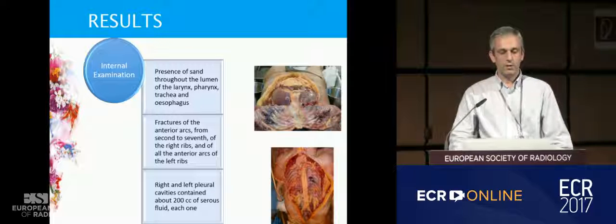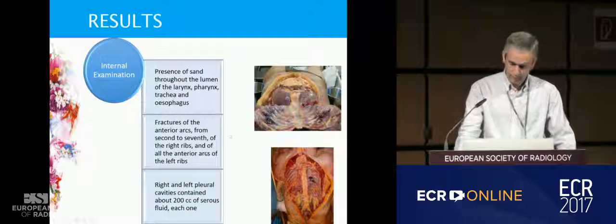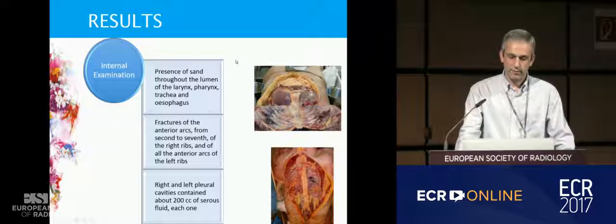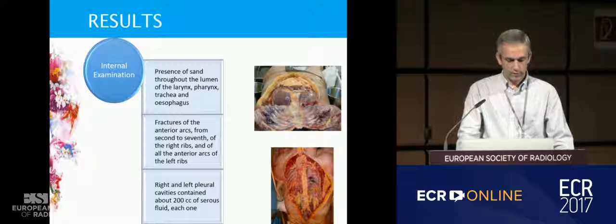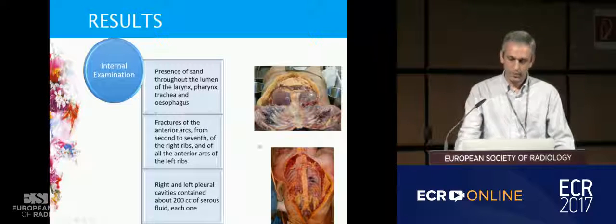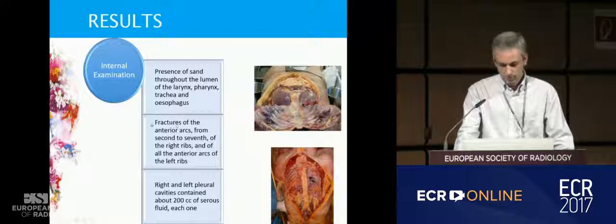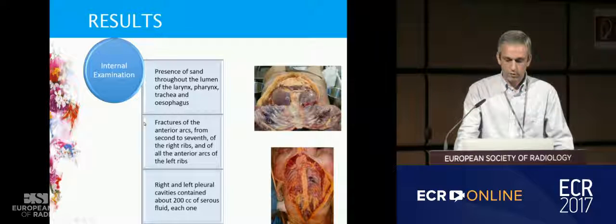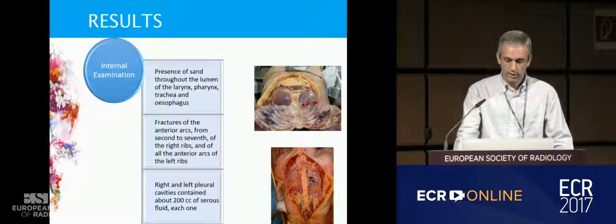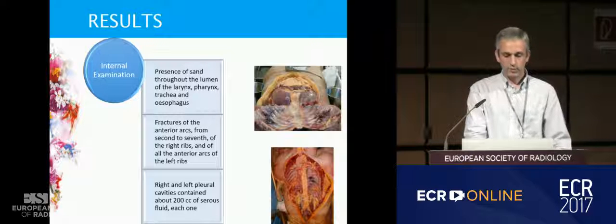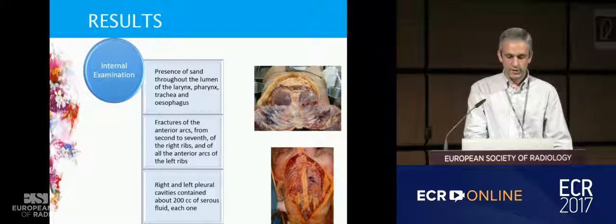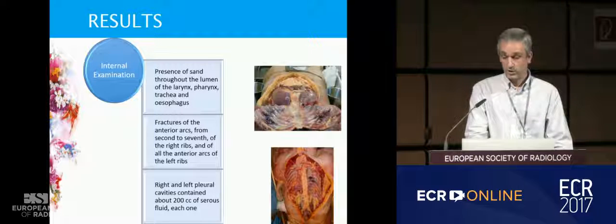In the internal dissection, it was seen the presence of sand throughout the lumen of the larynx, pharynx, trachea and esophagus. There were fractures of the anterior arcs from second to seventh on the right ribs, and of all the anterior arcs of the left ribs. The right and left pleural cavities contained about 200 cubic centimeters of serous fluid each.